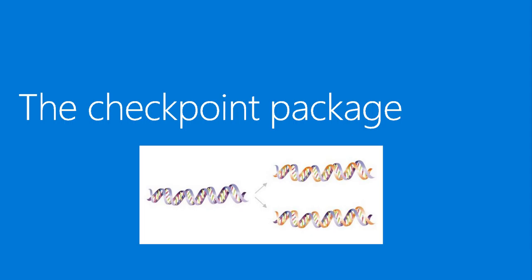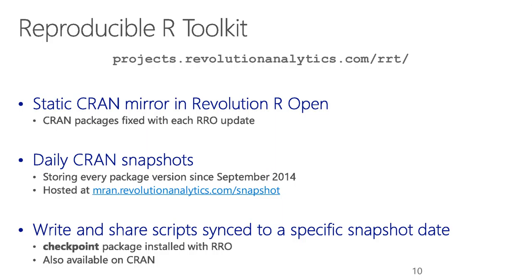So let me introduce you to the checkpoint package, which is part of the reproducible R toolkit that we bundle with Revolution R Open. Basically what this allows you to do is we back up all of CRAN every single day — every single day since September last year, so it's now an entire year's worth of history. We've effectively built a CRAN time machine. You can go back in time and download the versions of anything on CRAN — source, Windows binaries, Mac binaries, anything you wish — as it existed on a specific date. Now all you have to do is tell somebody to use a specific version of R and use versions of packages on a specific date, and if it worked on that date, it should work for you today.